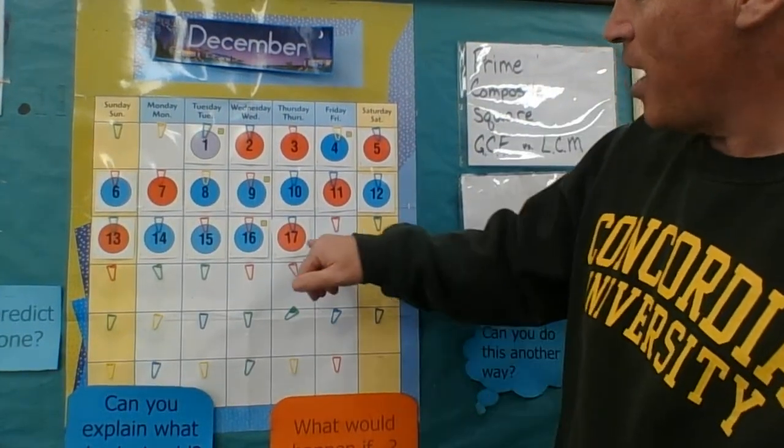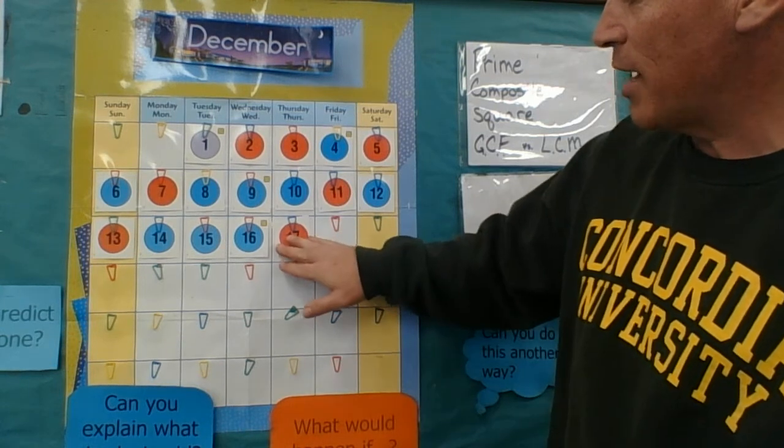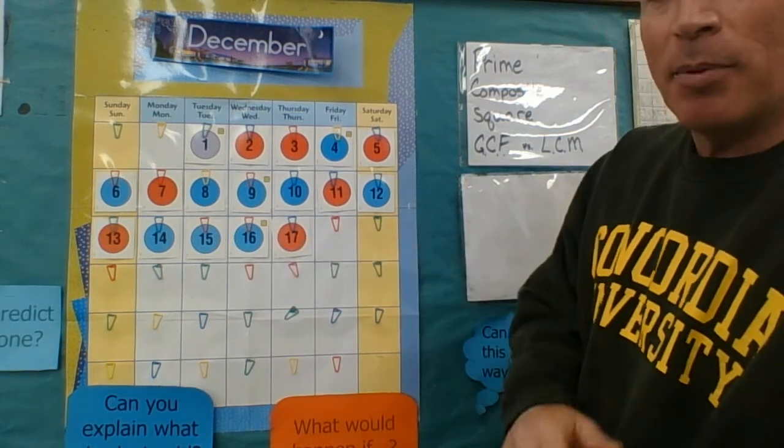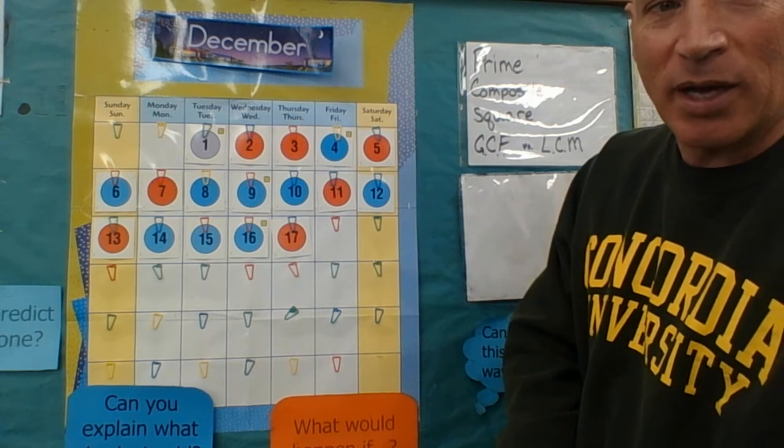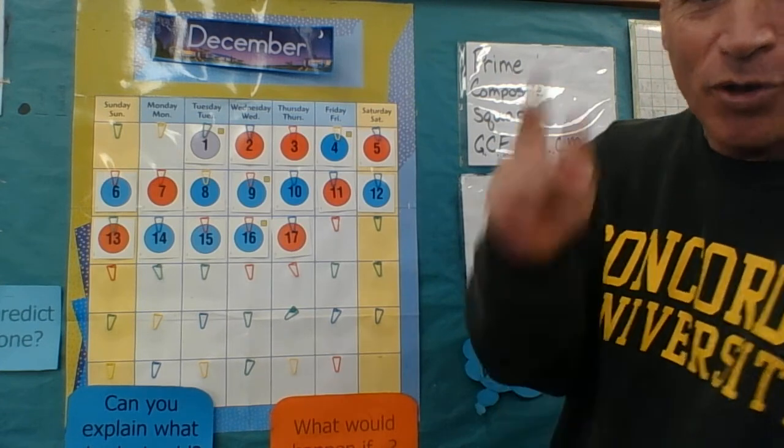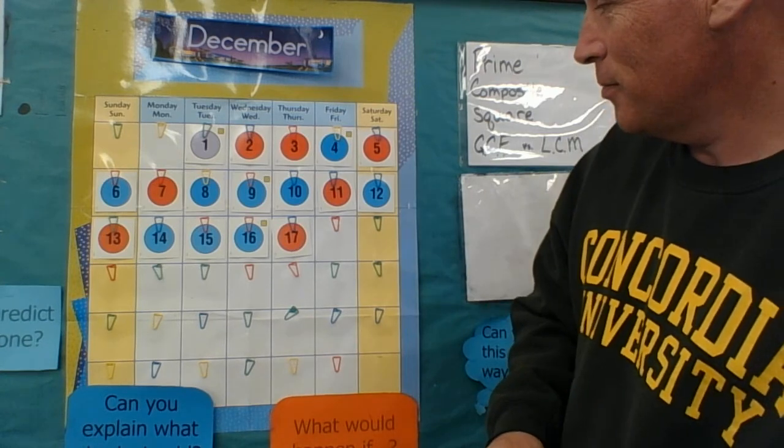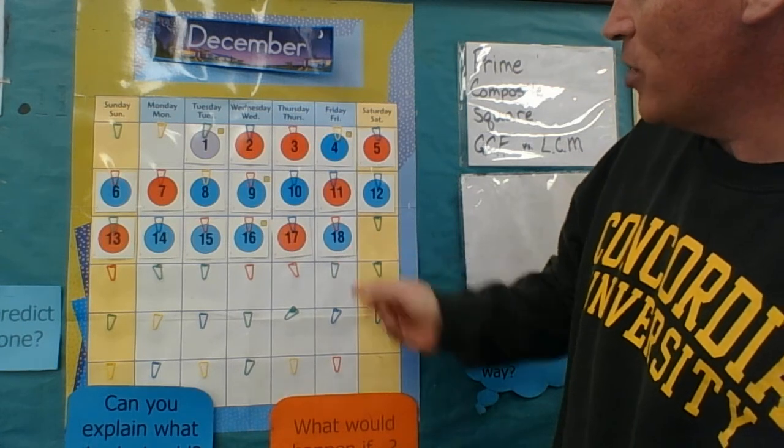Now for our calendar, we had a nice prime number. Since yesterday's prime, we can guarantee that it's probably not going to be a prime, it's going to be a composite. Can anybody guess why? If you said because it's going to be an even number, you were correct. So 18 is an even number, and all even numbers can be divided by two.